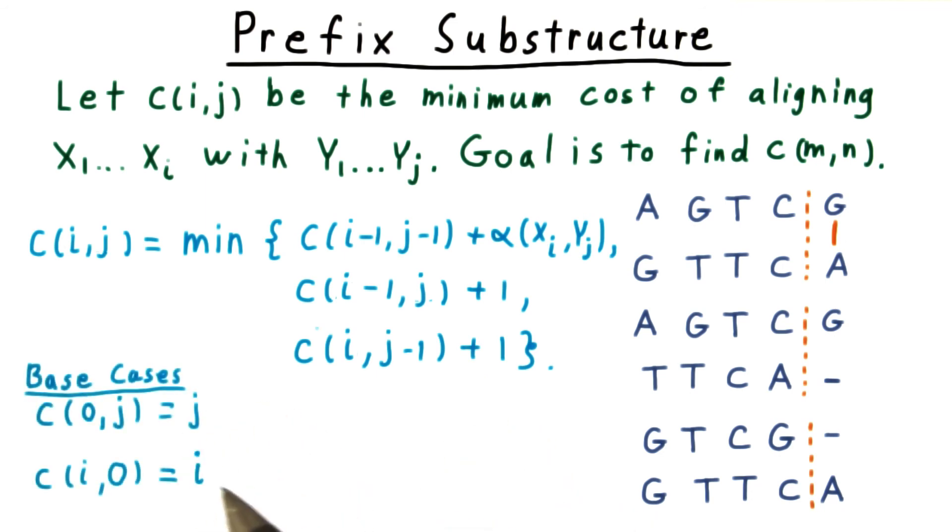Adding the base cases, where the cost of aligning a sequence with the empty sequence is just the length of the sequence, we have a recursive formulation: the optimal solution expressed in terms of optimal solutions to similar subproblems.